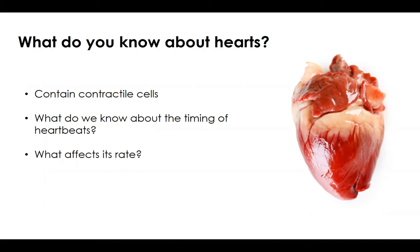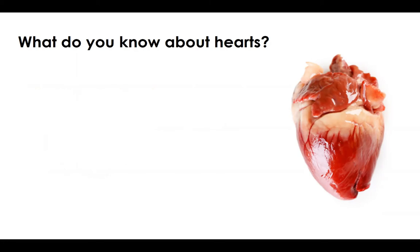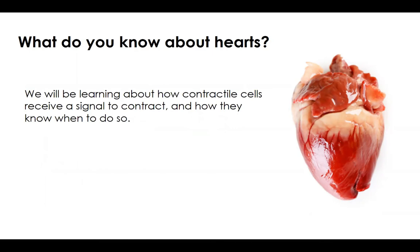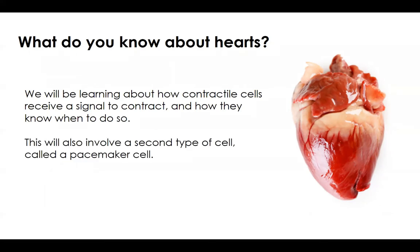We're going to learn more about how that rhythm is controlled at the molecular level. We'll be learning more about contractile cells and how they receive a signal to contract. Contractile cells, as you'd suspect, contain myosin and actin. But this also involves a second type of cell called a pacemaker cell, whose job it is to help the contractile cells keep time.